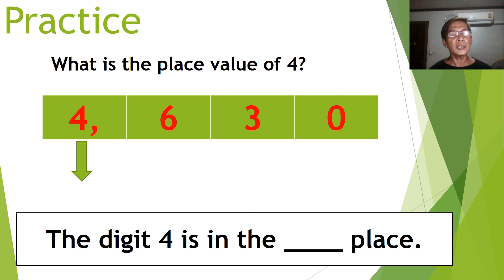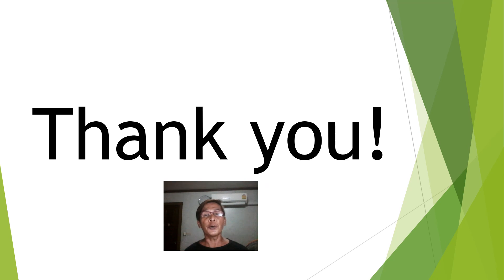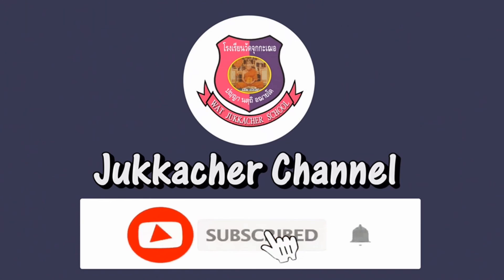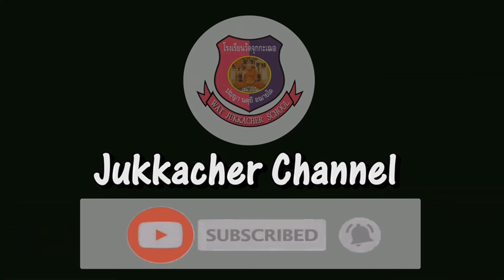What is the place value of four in four thousand six hundred and thirty? The digit four is in the thousands place. For your activity, I'm going to send it to you on our LINE. Thank you.